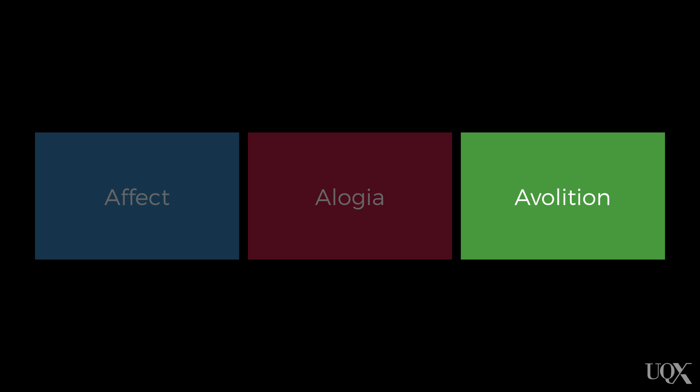Avolition is a negative symptom that you actually see across a number of different disorders. Depression springs to mind straight away, because what we're talking about here is a lack of motivation, and along with that, often social withdrawal from a person's family, from their friends and so on. Another common negative symptom involves a lack of self-care around personal hygiene.